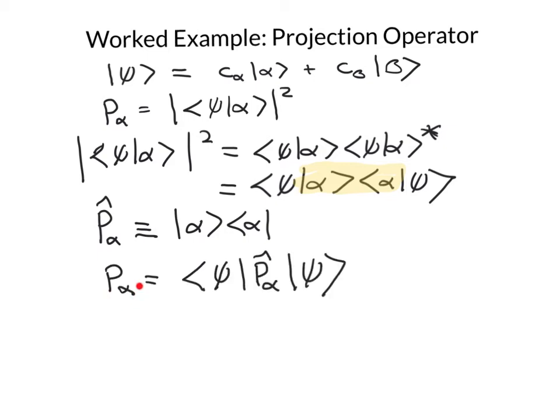So the probability of measuring the result alpha is just the expectation value of the projection operator. In other words, this quantity, when the projection operator is sandwiched in between the psis, that's just what we call the expectation value of this operator, of this projection operator. And this is the notation that you'll see used - it's introduced in chapter five of Beck, but he uses it in chapter eight when he's calculating probability. So it's really nothing new. It's just a recasting in a slightly different form of something that you already knew.